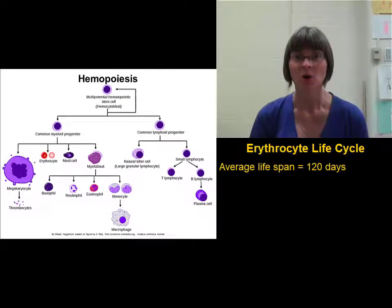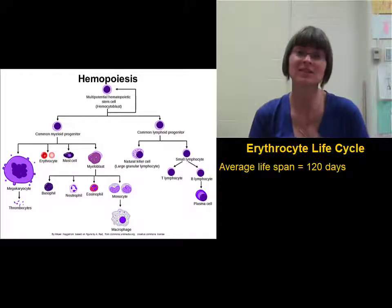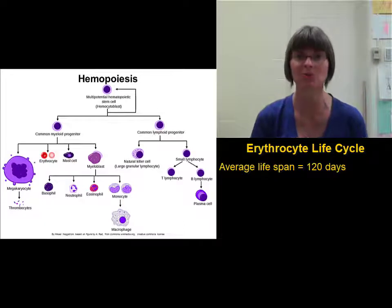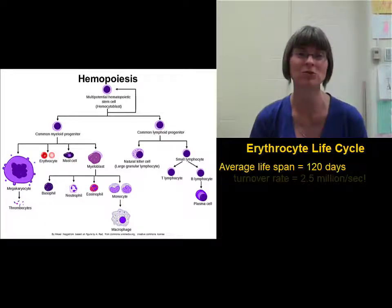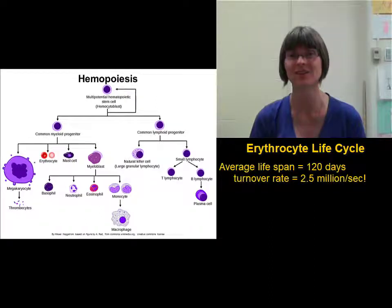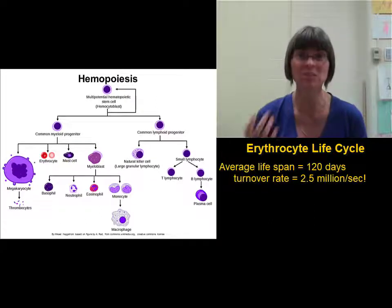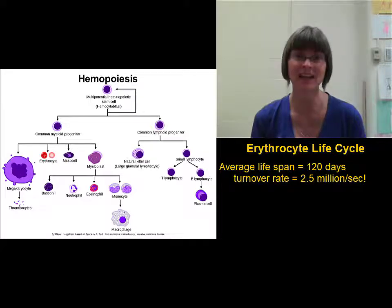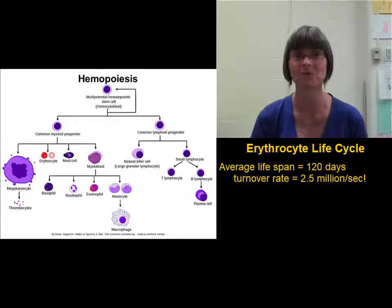Because of that, we constantly have erythrocytes that are dying, and we constantly are producing new erythrocytes to replace them. The turnover is at a rate of about 2.5 million cells per second. So every second that you listen to this lecture video, 2.5 million of your erythrocytes are dying, and another 2.5 million erythrocytes are being produced.